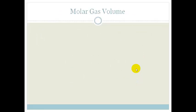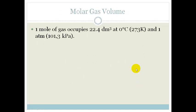Now let's look at the molar gas volume. One mole of gas, doesn't matter what it is, occupies 22.4 decimeters cubed at a specific temperature. And the temperature is 0 degrees Celsius, or another way of saying it is 273 Kelvin, and one atmosphere, or 101.3 kilopascals.